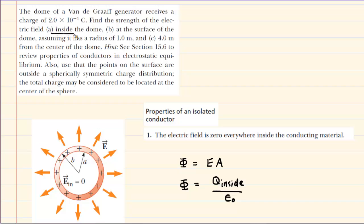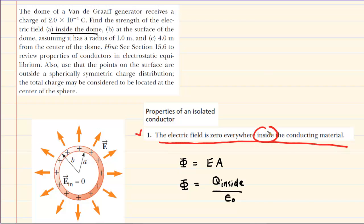In part A, we have to determine the electric field inside of the dome. We have a picture of what the dome might look like — it's basically a spherical conductor with an excess of positive charge located on that surface. There are two ways to calculate the electric field inside the dome: the quick and dirty way and the more technical way. The quick way is to recall the properties of an isolated conductor, which is exactly what this dome is. For an isolated conductor, the electric field is zero everywhere inside of the conducting material.